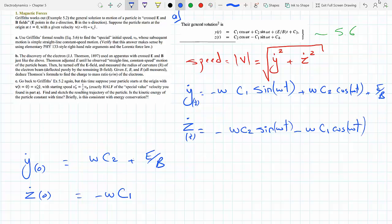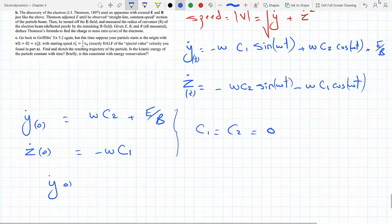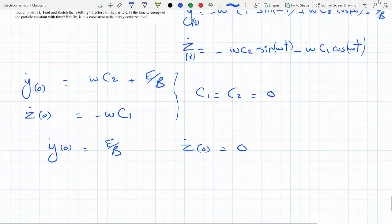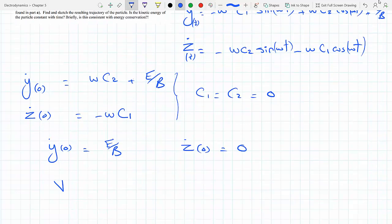Now think about it. You want this to be independent of the period, so if that's the case, c1 has to equal c2 or they have to go away. So c1 has to equal c2 has to equal 0. And when that happens, you're just left with y_0 equal E over B and z_0 equals 0. And now when you find the speed, you get E over B, which is constant.